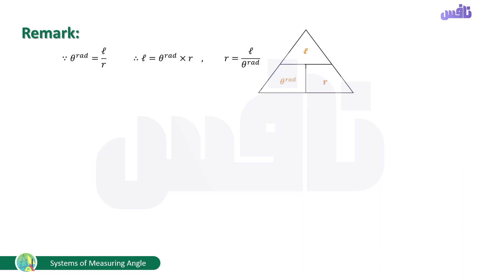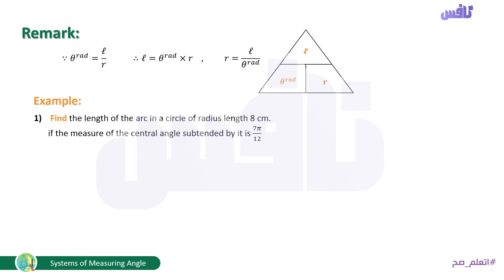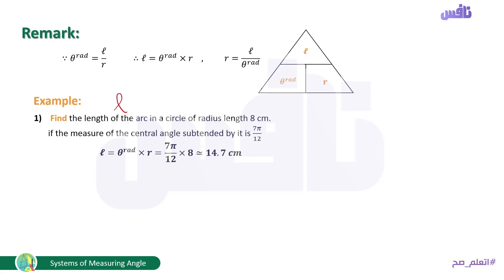Example 1: find the length of the arc in a circle of radius 8 cm if the central angle subtended by it measures 7π/12. Required: L. Using L = θ rad × r: L = (7π/12) × 8 ≈ 14.7 centimeters.